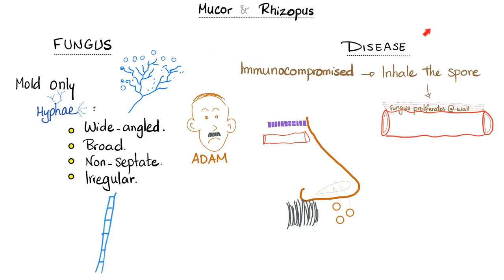How does this fungus infect you? Let's suppose we're talking about Adam, who is immunocompromised. Adam will inhale spores of the fungus - Mucor or Rhizopus. The spores enter through the nose. They will start invading and proliferating in the wall of the blood vessel. Your nose has a huge number of blood vessels, which is why you can bleed from your nose. After they erode and destroy the blood vessel, they start eating into the bone at the roof of your nose.